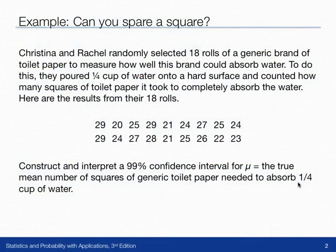Christina and Rachel randomly selected 18 rolls of generic brand toilet paper to measure how well this brand could absorb water. To do this, they poured a quarter cup of water onto a hard surface and counted how many squares of toilet paper it took to completely absorb the water. Here are the results from their 18 rolls.